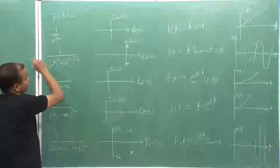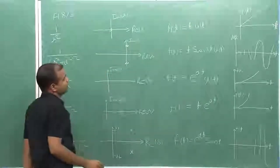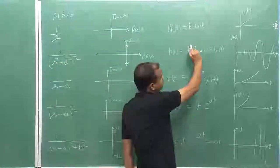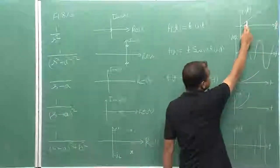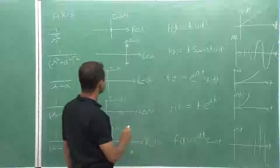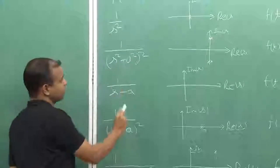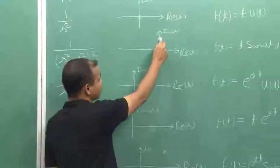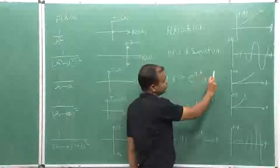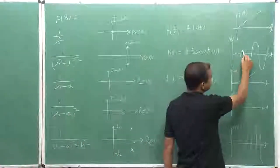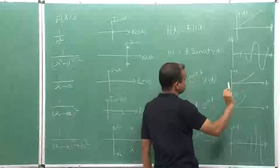If my transfer function is 1/s², there will be a double pole at the origin and my response will be t·u(t), which is diverging and the system is unstable. For 1/(s² + a²)², there are two double poles on the imaginary axis and my response will be t·sin(at)·u(t), a sinusoidal wave which is increasing in magnitude, and this will also be unstable.